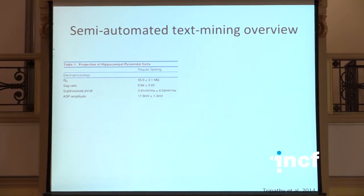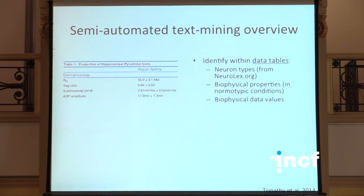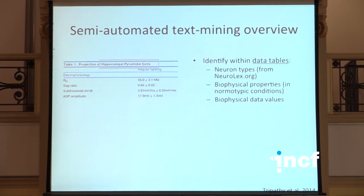From the downloaded articles, text mining scripts identify data tables published within those articles. Occasionally a scientist will summarize their electrophysiology measurements with a nicely formatted HTML data table, which is relatively straightforward to extract information from. I first need to identify what type of neuron was being recorded — for example, a hippocampal pyramidal cell — and map that mention to a canonical listing of neuron types from Neurolex.org, which is an INCF-sponsored, expert-defined listing.